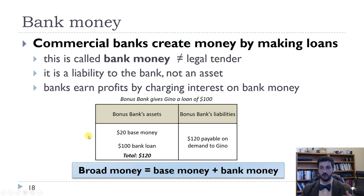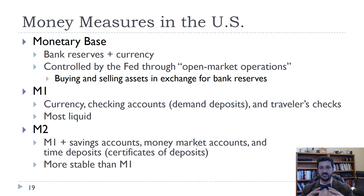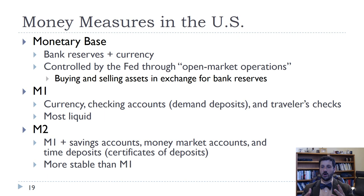In the U.S. specifically, the monetary base is bank reserves and currency. It's controlled by the Fed through open market operations, which is when the Fed buys or sells — usually treasury bills, sometimes other assets — in exchange for bank reserves, so they can increase or decrease the amount of bank reserves in the system. M1 is our most common measure of the money supply: it's currency, checking accounts (sometimes called demand deposits), and traveler's checks.